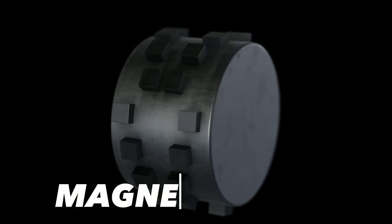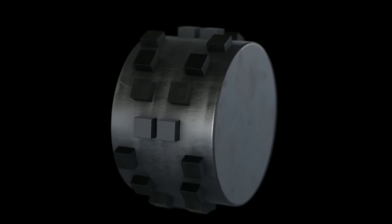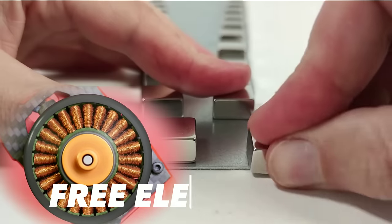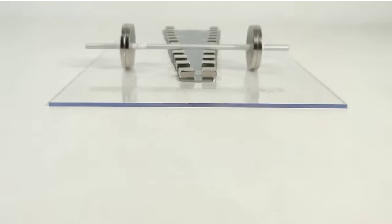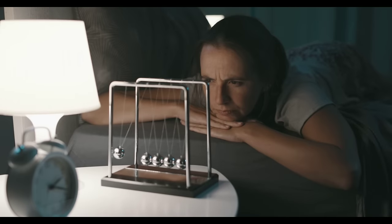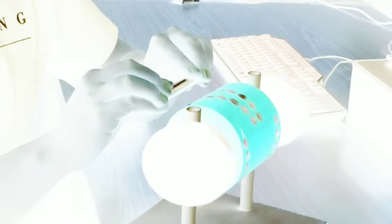A magnet motor is a device that uses magnets to create perpetual motion that can power a generator and produce free electricity. Sounds awesome, right? But how does it work? And is it really possible? That's what we're going to find out in this video. So buckle up and get ready for a mind-blowing journey into the world of magnet motors.